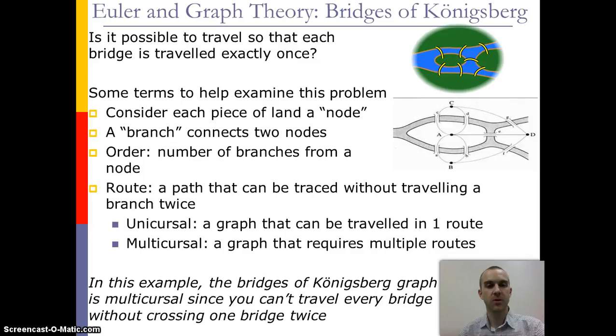And this actually leads to the concepts of graph theory. When we look at it, each side of the river and the islands become nodes, and the bridges themselves represent our methods of branches. And so when we talk about a node, we're looking at the order of that node and telling us the number of branches that are coming off that specific node.